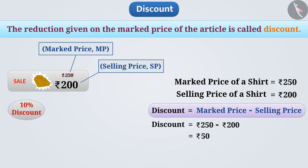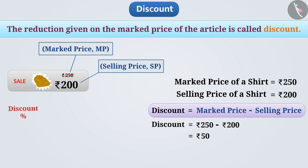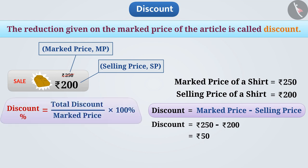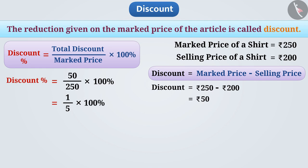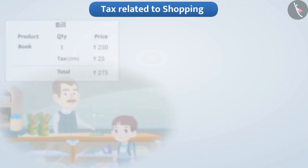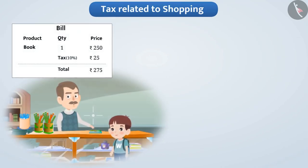Mostly the discount is given as a percentage. Since the discount is given on the marked price, we consider the marked price as the base. Discount % = (50 ÷ 250) × 100% = (1 ÷ 5) × 100% = 20%.